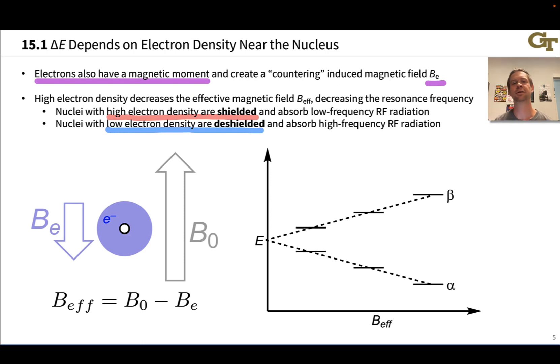Around nuclei with low electron density, around protons with low electron density, we get a relatively low countering magnetic field from the electrons and relatively high effective magnetic field felt by the nuclei. This all affects the precession frequency and the frequency of light absorbed.